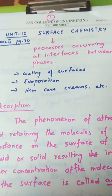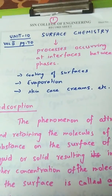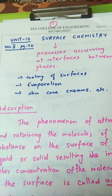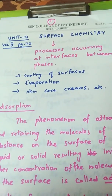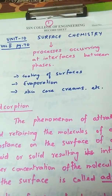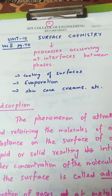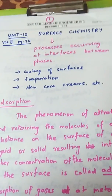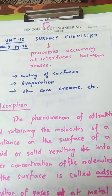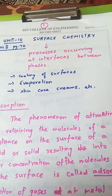Hi students, we are going to start 12th standard portions. I don't want to take the first volume because it carries so many equations and we need the periodic table also. So I am going to start with a chapter which is full of theory — the 10th chapter, which is in the second volume, page number 17. The chapter name is Surface Chemistry.